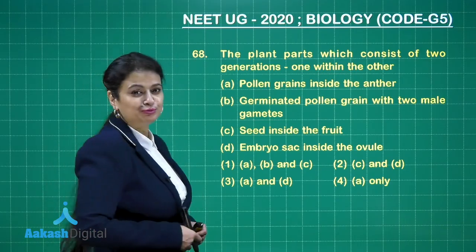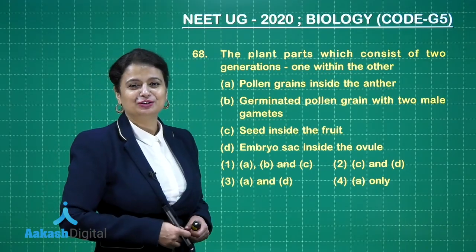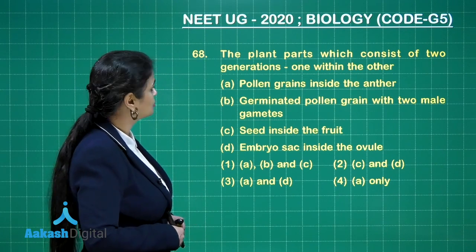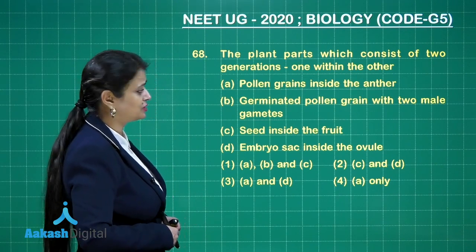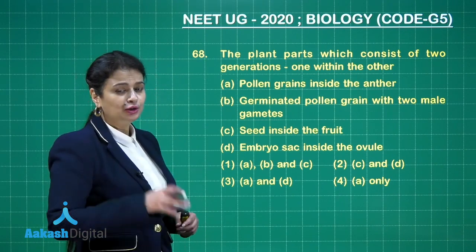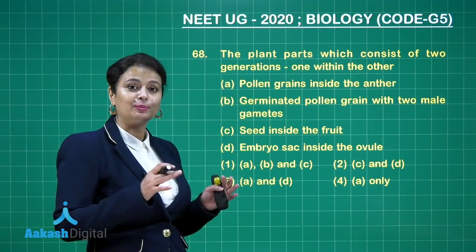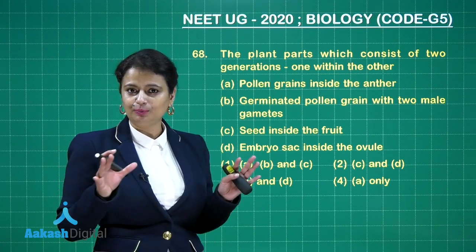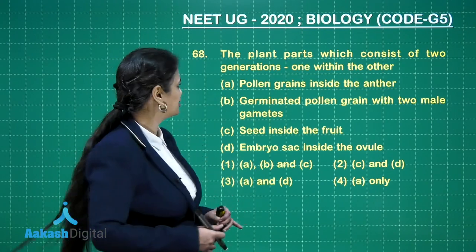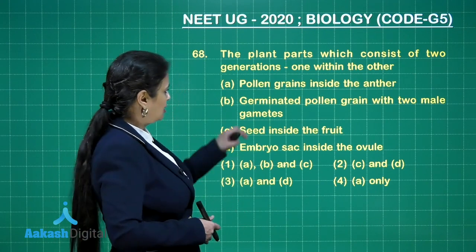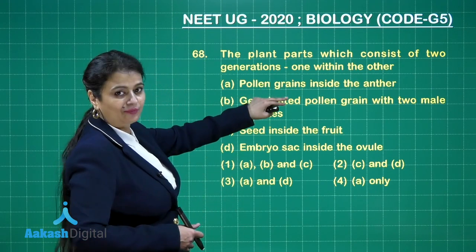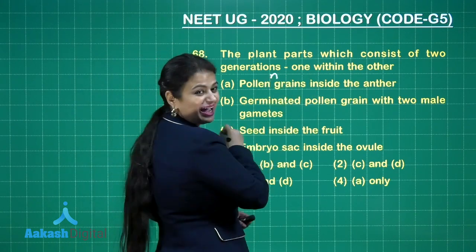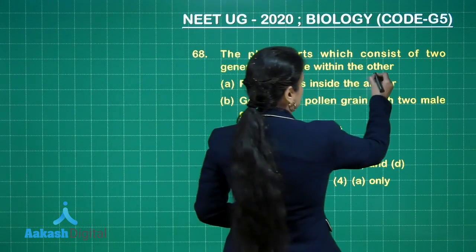Question from chapter Plant Kingdom: which plant parts consist of two generations, one within the other? The haploid generation is known as gametophytic generation and the diploid one is known as sporophytic generation. Pollen grains inside the anther represent the haploid generation, while the anther itself represents the diploid sporophytic generation.